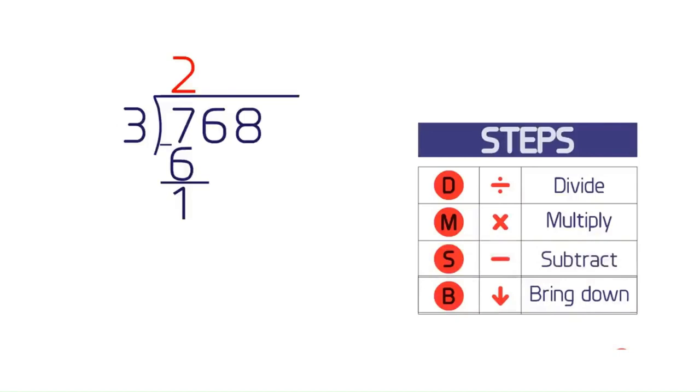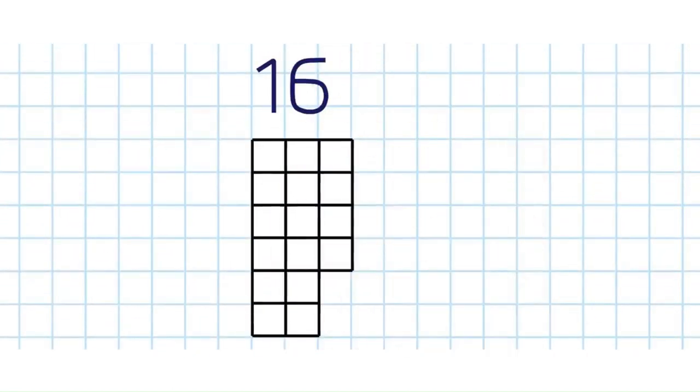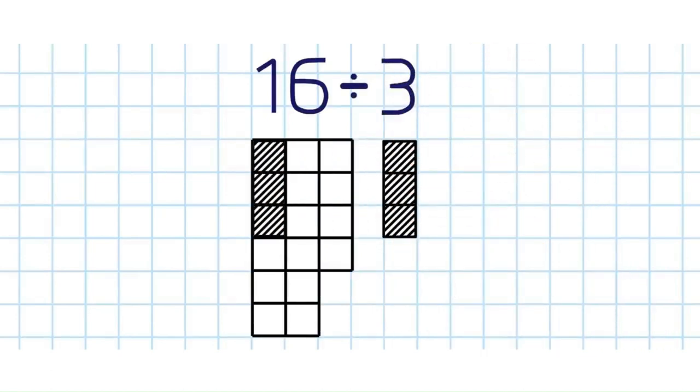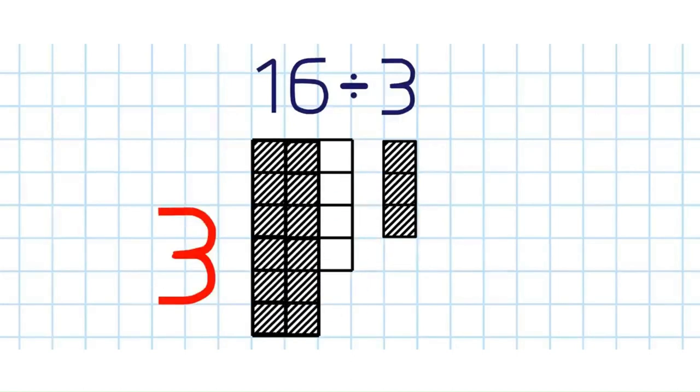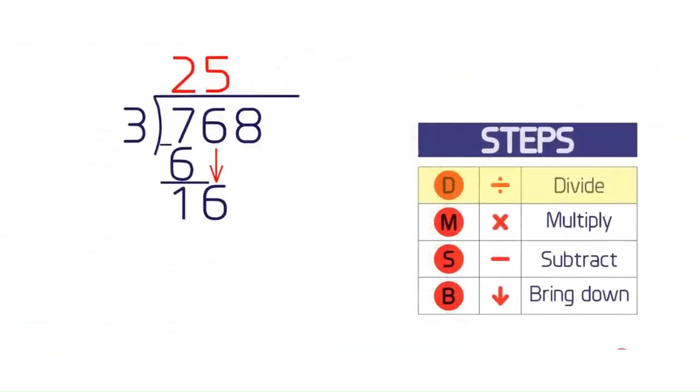Then bring down the next number, 6, to make the new number 16. Now ask how many times 3 goes into 16. That is, what's 16 divided by 3? The answer is 5, with a remainder. So write 5 above the 6.